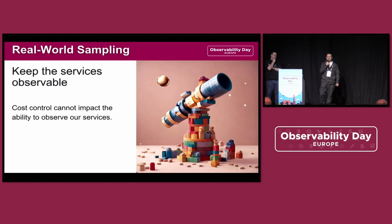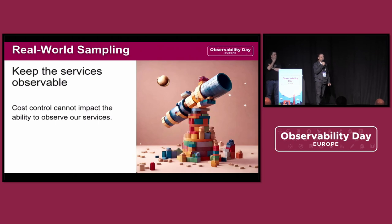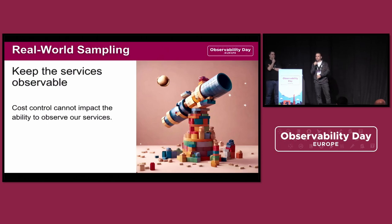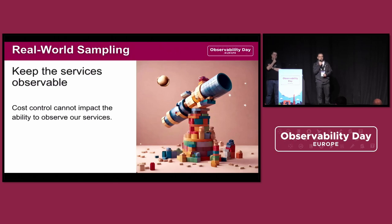Keeping services observable: when we implement some kind of sampling, we cannot lose visibility of our workloads. When some kind of error, crash, or critical incident happens, you need good data to analyze, perform troubleshooting, and recover the platform.